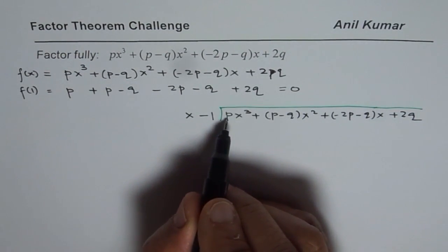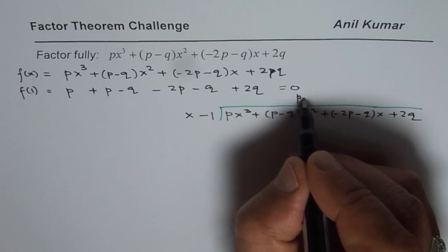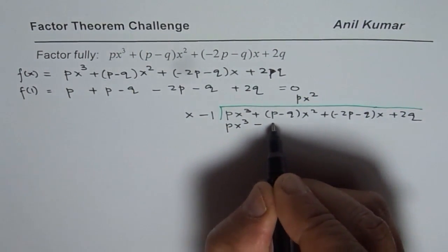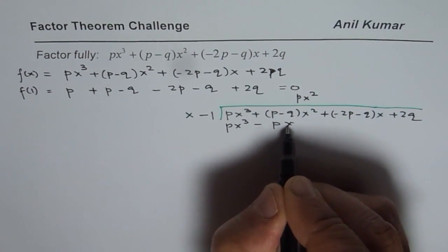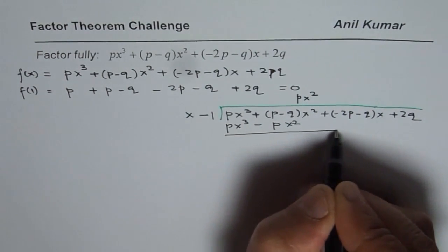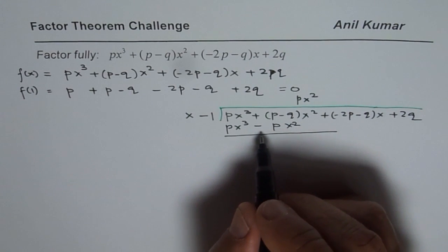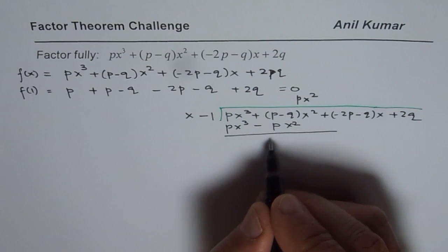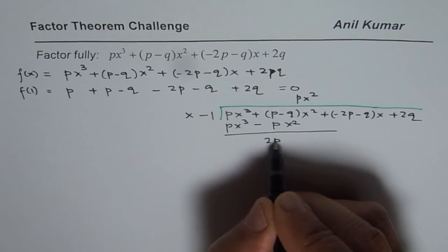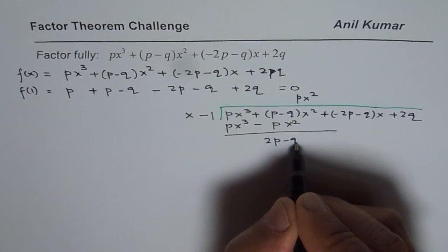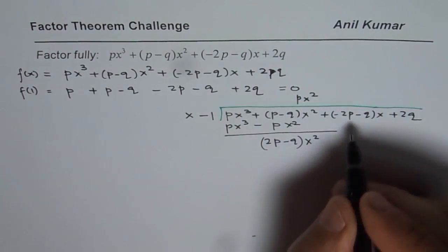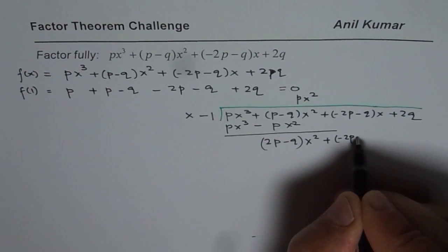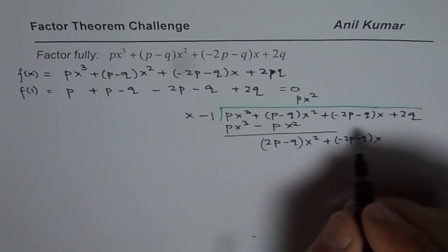So if I divide by x-1, we get here px². Multiplying by px², we get px³ - px². So when we take away,